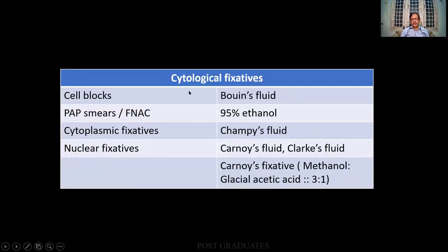Cytological fixatives — this kind of classification is given in Culling. Chemical classification and cytoplastic fixatives, psychological fixatives are given in Culling. Cytological fixatives are usually used where cells will have to be preserved. Obviously there is a cell block — you centrifuge and then you get a clump of cells fixed in Bouin's fluid. For Pap smears, ethanol and cytoplastic fixatives are used; champagne fluid, nuclear fixatives, Sternheimer fluid, Flux fluid, etc.